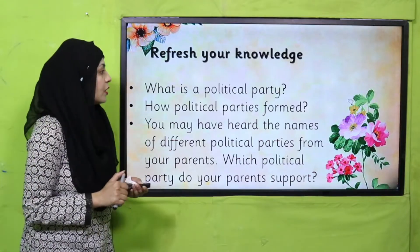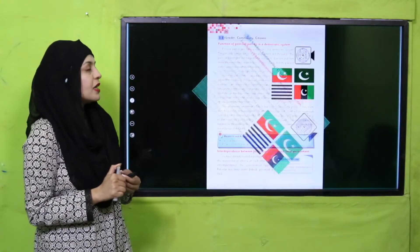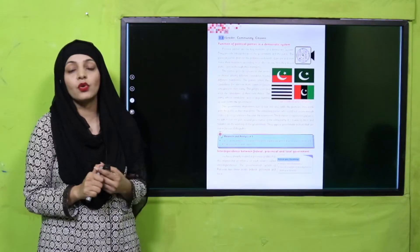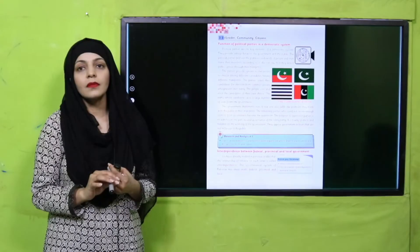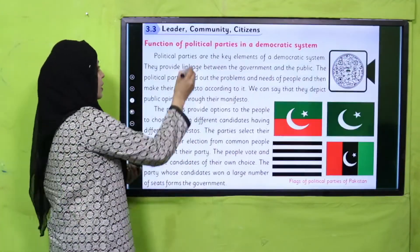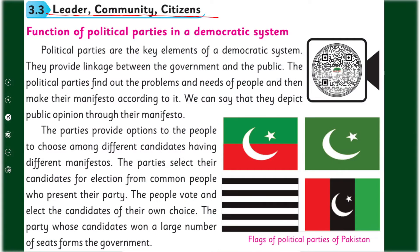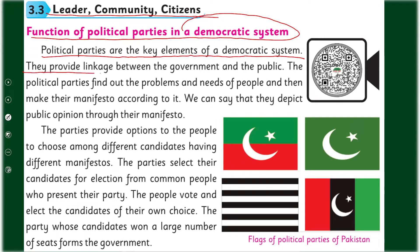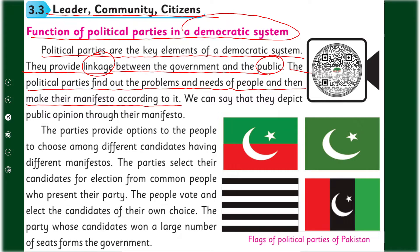Now let's move forward. Please open page number 36 in your Social Studies books. Let's start the reading: 'Function of Political Party in a Democratic System. Political parties are the key elements of a democratic system. They provide linkage between the government and the public. The political parties find out the problems and needs of people and then make their manifesto according to it.'